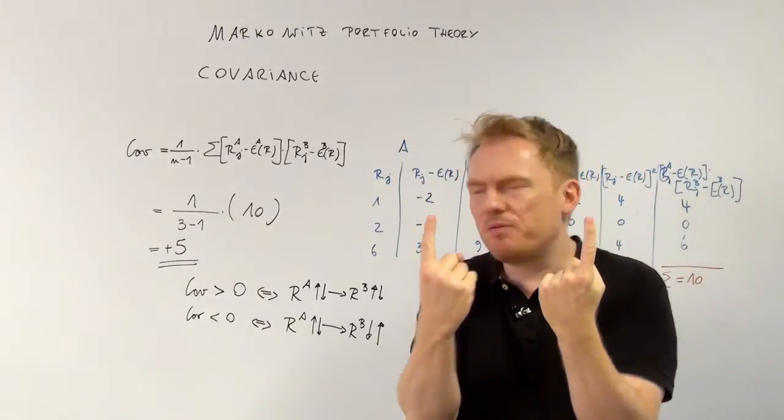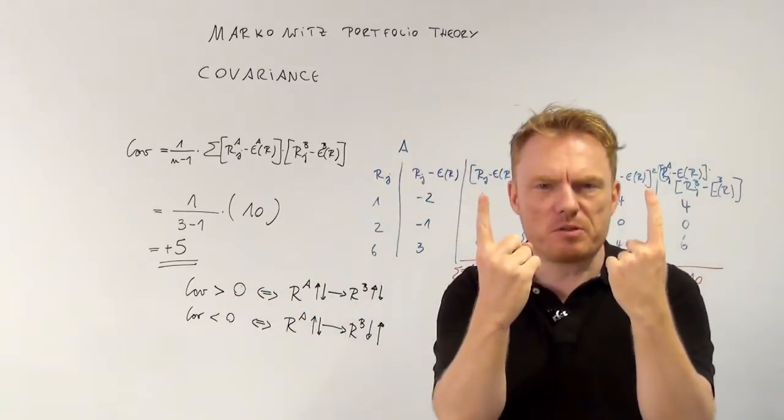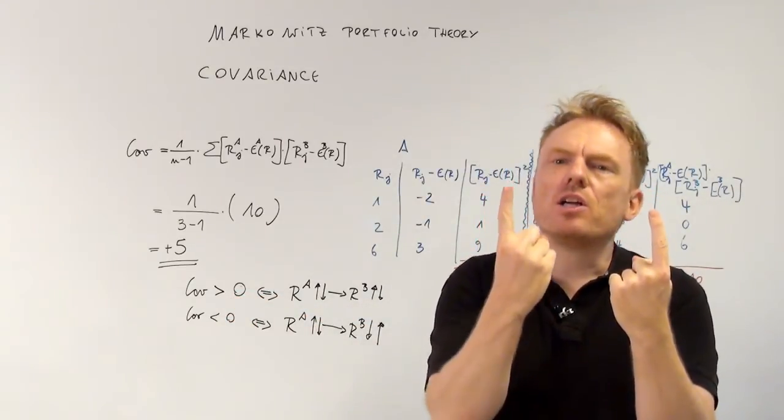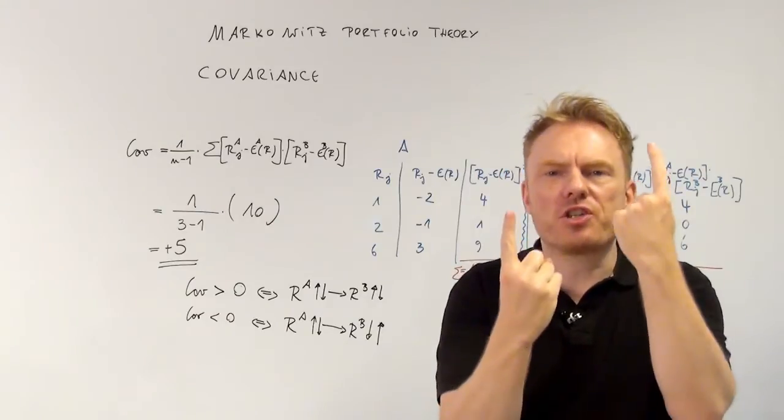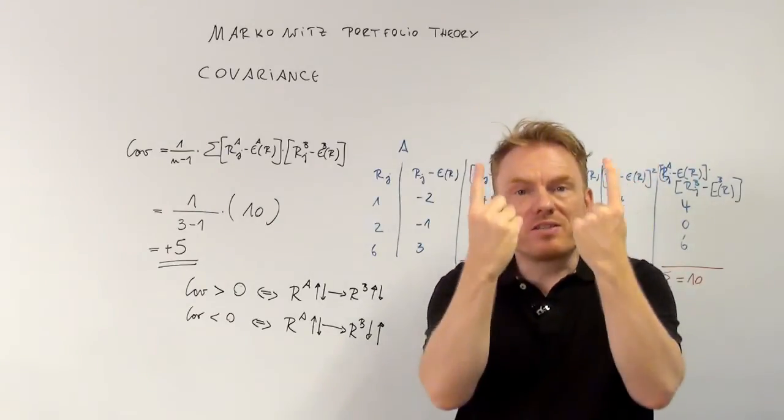If the covariance is strictly superior to 0, then the returns of both shares rise or fall.